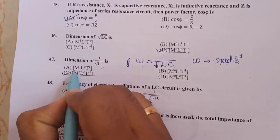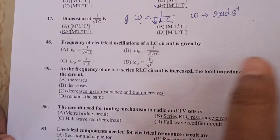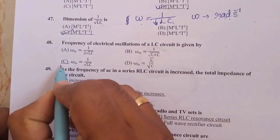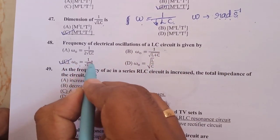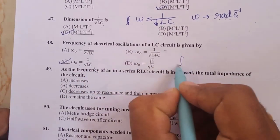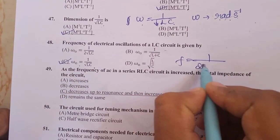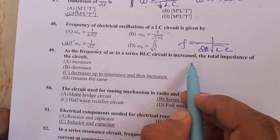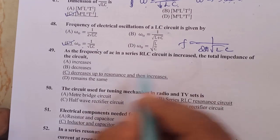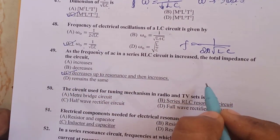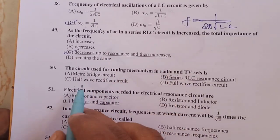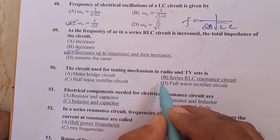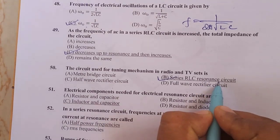Dimension of 1 divided by root of LC is radian per second, which gives M⁰L⁰T⁻¹. Frequency of electrical oscillation of an LC circuit is given by ω₀ equals 1 divided by root of LC, or f equals 1 divided by 2π root of LC. As the frequency of AC in an LCR circuit is increased, the total impedance of the circuit decreases up to a certain value and then increases. The circuit used for tuning the mechanism in a radio and TV set is called a series LCR resonant circuit.